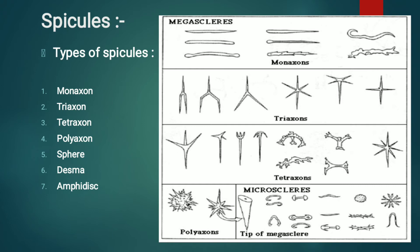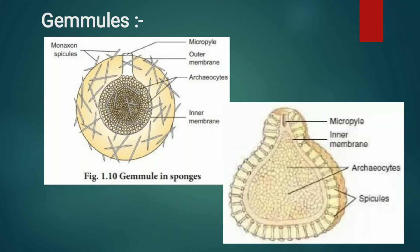In this picture we can see the megasclere types: monaxone, triaxone, tetraxone, polyaxone, and some microsclere types. This is all about the spicules.